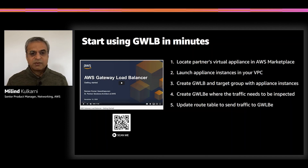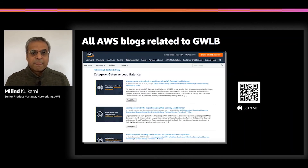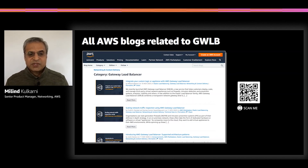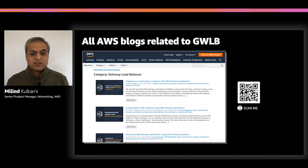Another resource is a series of blogs that we continue to publish. Scan the QR code to reach a running list of blogs related to Gateway Load Balancer — there is a tag called 'Gateway Load Balancer' you can click to find all related blogs. One blog shows how to integrate your appliance with Gateway Load Balancer, another shows how to scale your appliance for traffic inspection, and another covers supported architecture patterns that customers have been using.